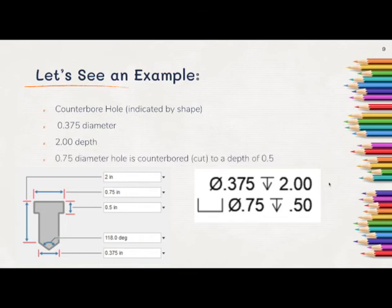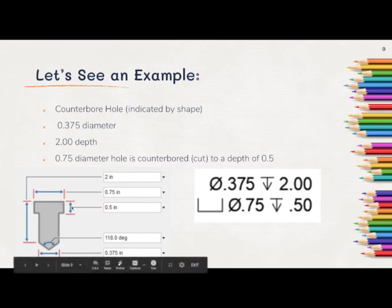We then have a .75 diameter hole that is counterbored, or cut, to a depth of .5. That's indicated in this area right here, as the counterbore.